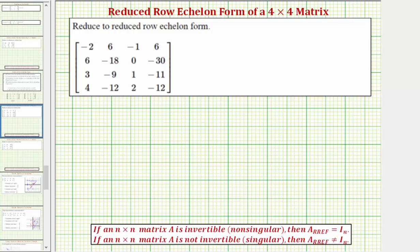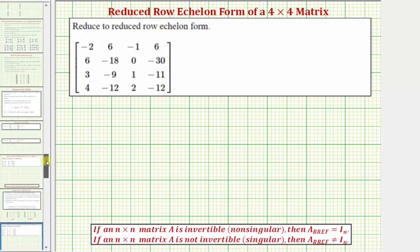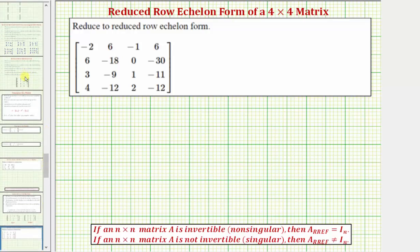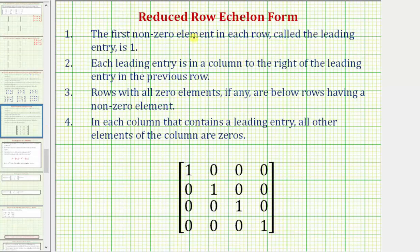We want to write the given four by four matrix in reduced row echelon form. For review, these four conditions must be met for a matrix to be in reduced row echelon form.